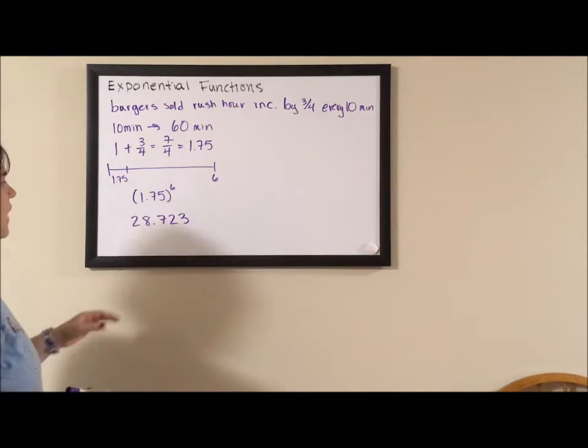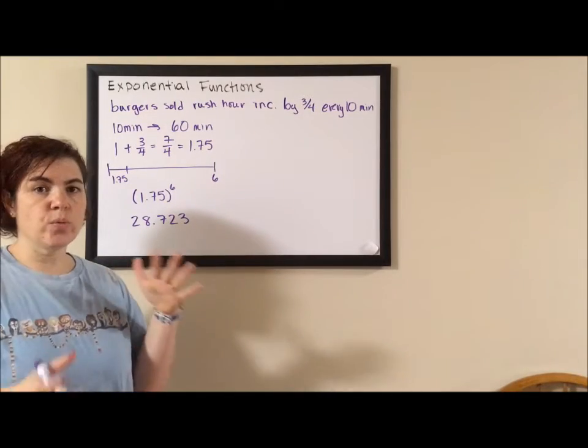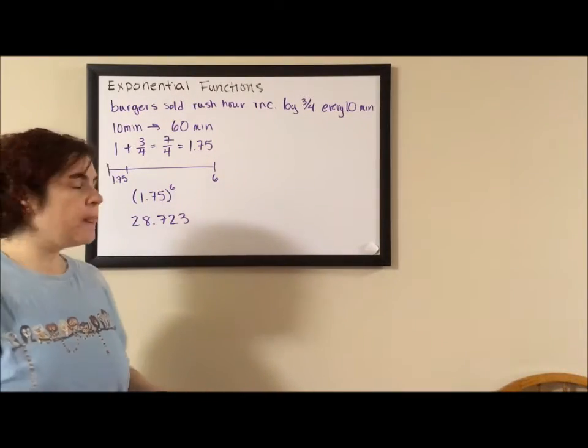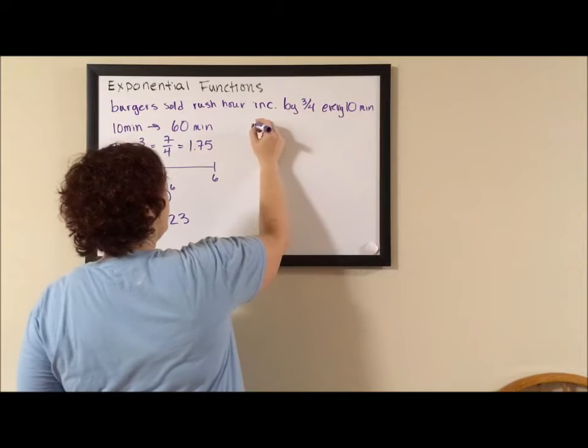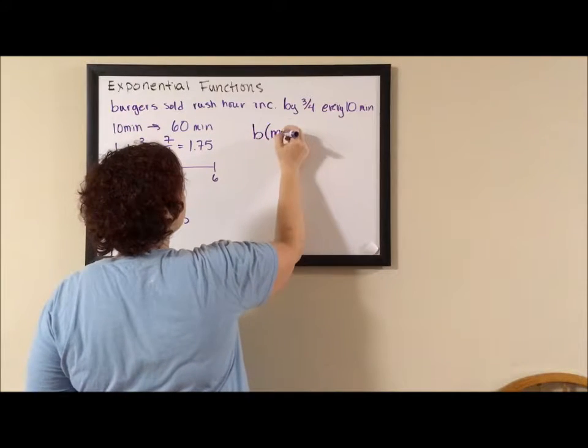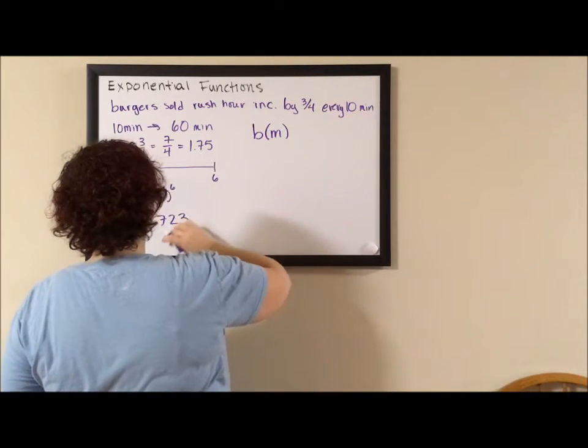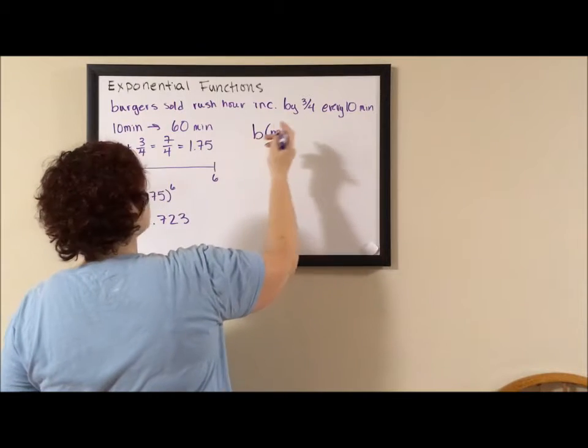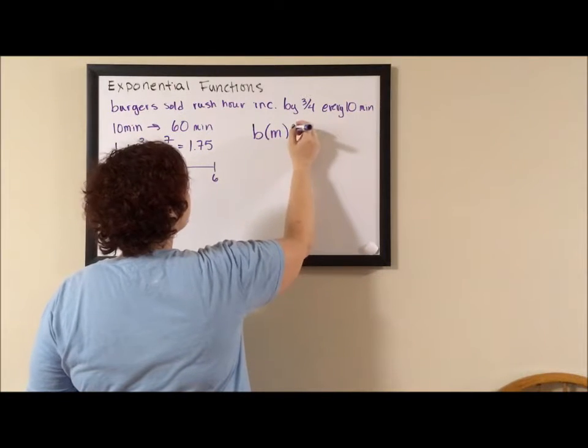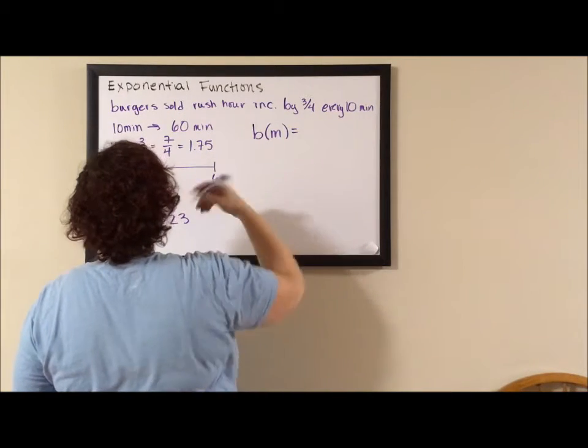Okay, so now I feel we have enough information to write this formula. So I'm going to say the burgers per minute is going to be our initial. You don't have an initial.